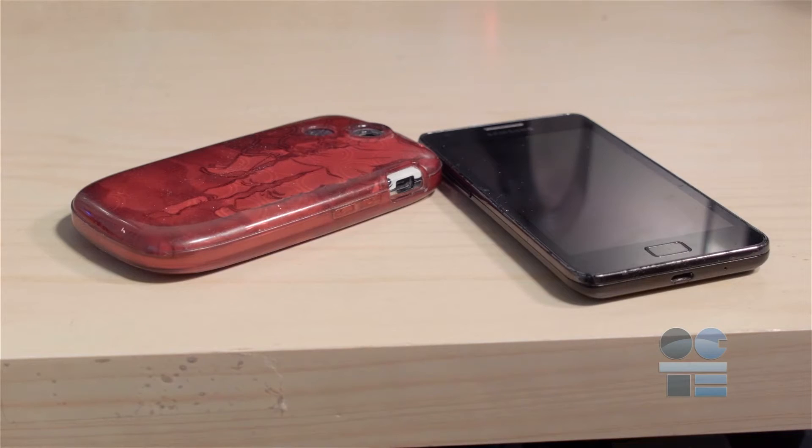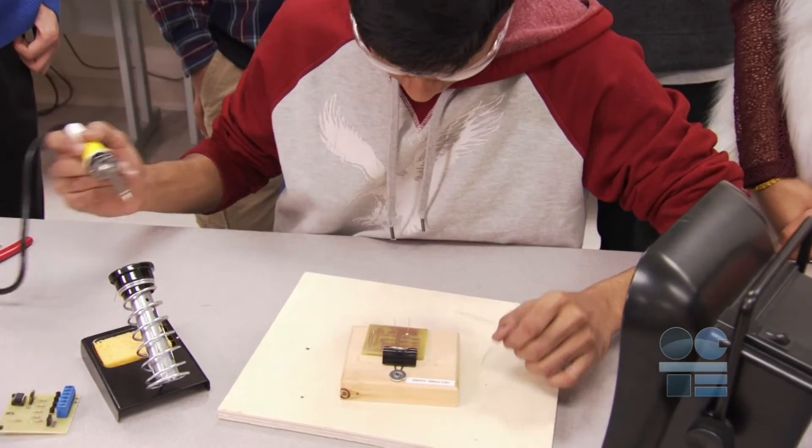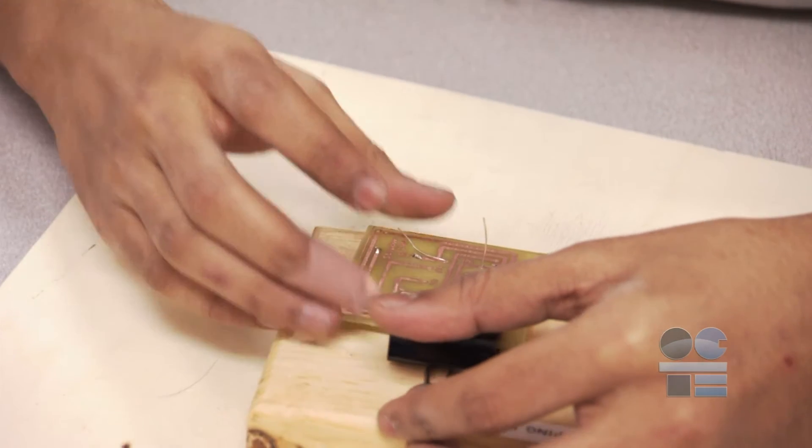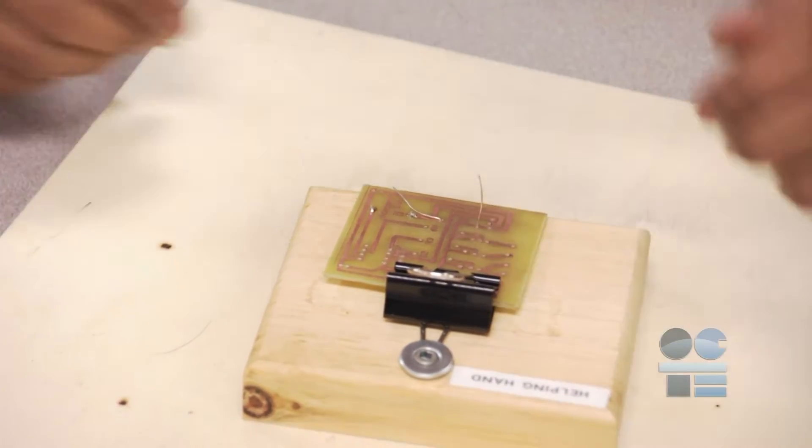Put away your phone and focus. When soldering, you have the soldering iron in one hand and the solder in the other. You need something to stop the board from moving around. The PC board stand or a set of helping hands will allow the board to remain steady while soldering.